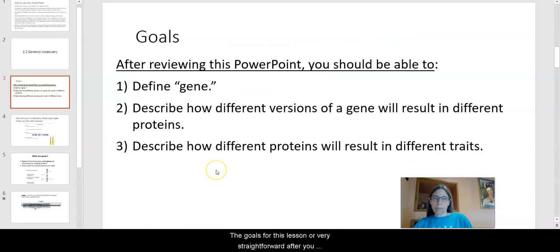Okay. So now we're going to move forward. The goals for this lesson are very straightforward. After you go through this PowerPoint lecture, you're going to be able to define gene and describe how different versions of a gene will result in different proteins. Because this is a really key point that you can think about genes as instructions for making individual proteins. And then we want to be able to describe how different proteins will result in different traits. And that's where the spirit bears will be a great example to help you see how this works out.